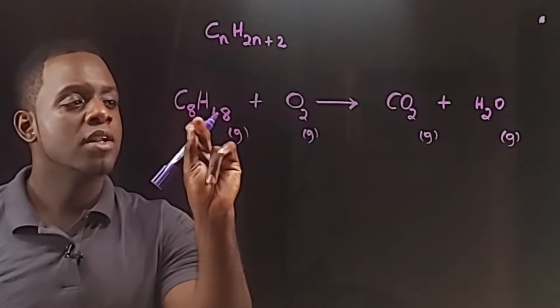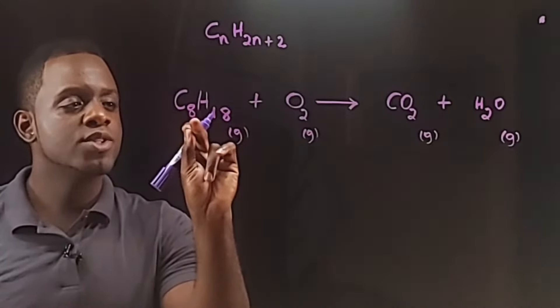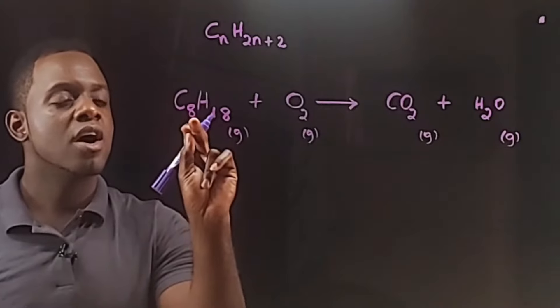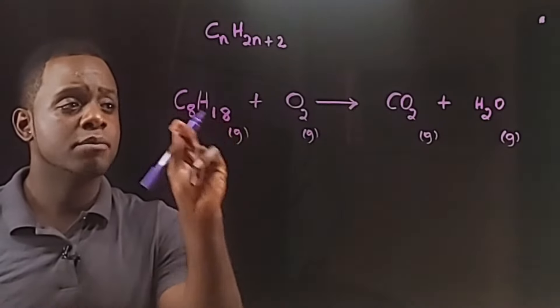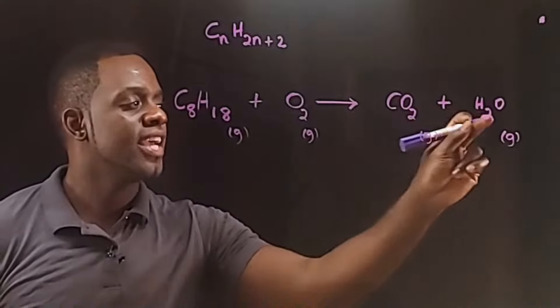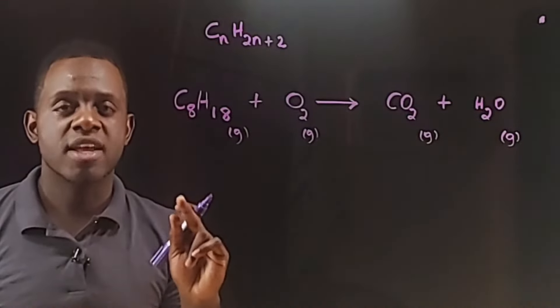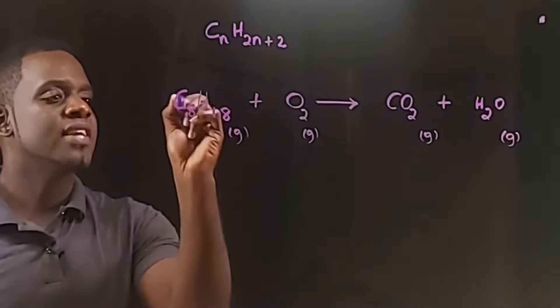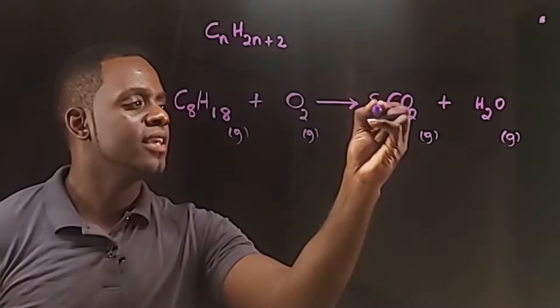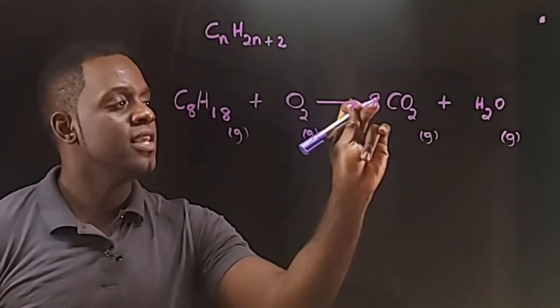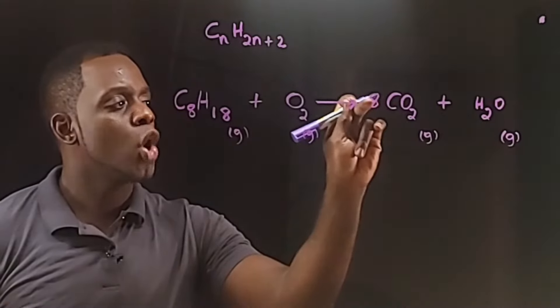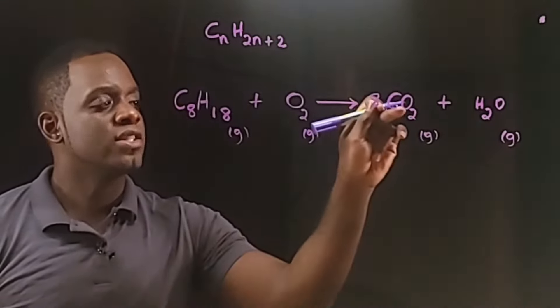We know that these small numbers in the subscript position on the right of each element represent the number of atoms of that element that's in a compound, and when we balance a chemical equation we do not alter these numbers. Instead, we add coefficients if necessary. So we have eight carbon atoms on the left hand side. We have only one on the right, so we need to add an 8 here. Now this 8 affects the amount of oxygen atoms because the coefficient multiplies all of the atoms in the compound, but we'll get to oxygen last.